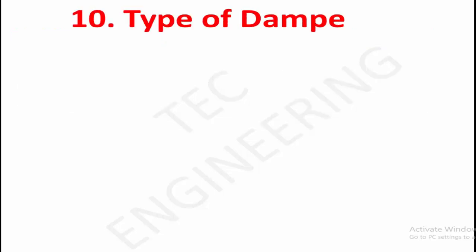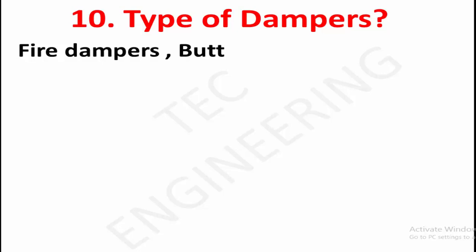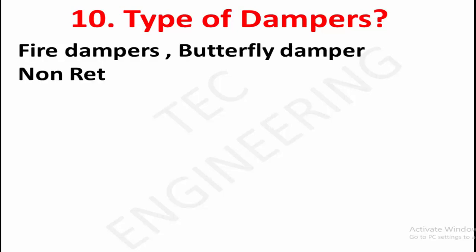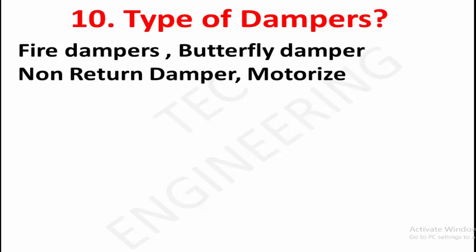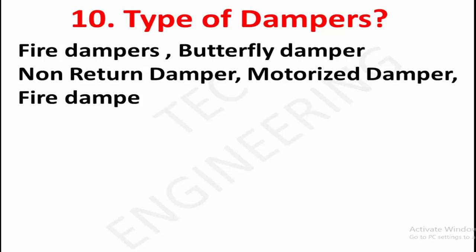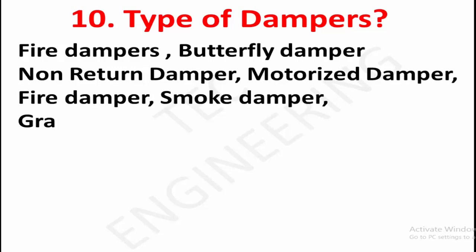Types of dampers: fire damper, butterfly damper, non-return damper, motorized damper, smoke damper, and gravity damper.